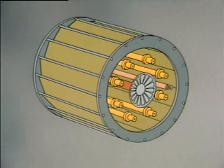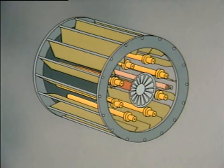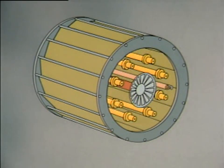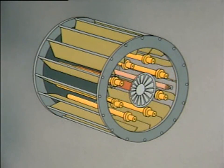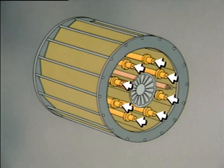This burner, for example, is a typical gas burner. It uses dampers, or registers, to regulate the amount of air entering the burner. Pipes called spuds inject natural gas into the boiler.